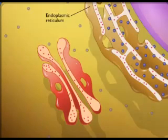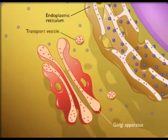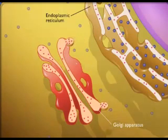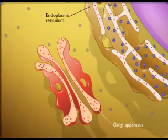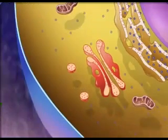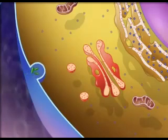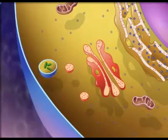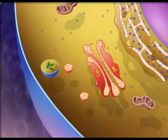These enzymes are then transported to the Golgi apparatus by transport vesicles. The lysosomes arise from the Golgi apparatus. When particles such as viruses or bacteria are ingested by phagocytosis, the lysosome fuses with the particle-containing vesicle, called a phagosome, and delivers the hydrolytic enzymes.